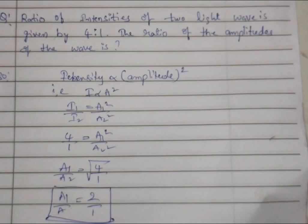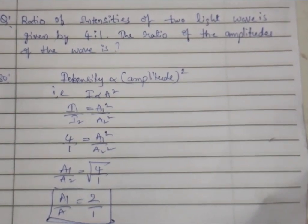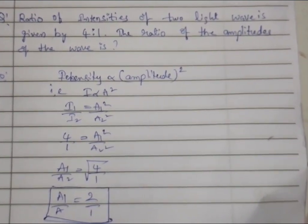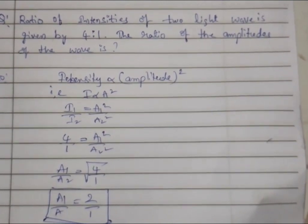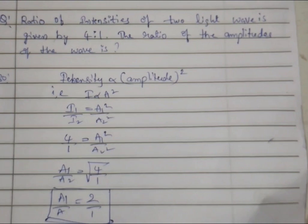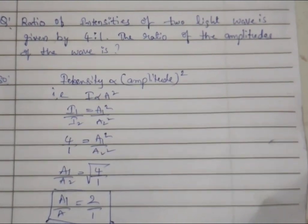As we know, intensity is directly proportional to amplitude squared. That is, A is directly proportional to root I. Or you can write I is directly proportional to A squared. So they have given in the question I₁ by I₂.